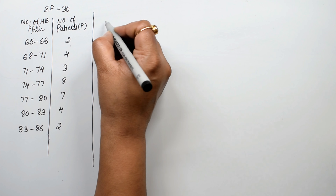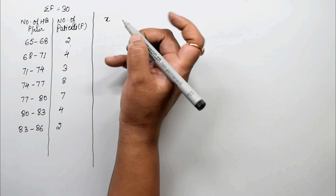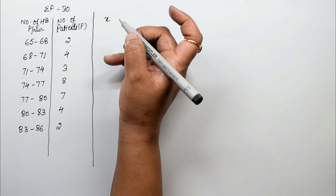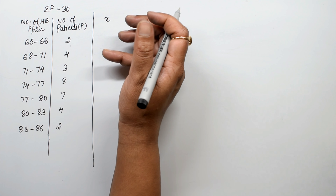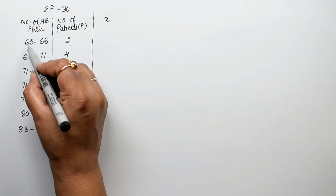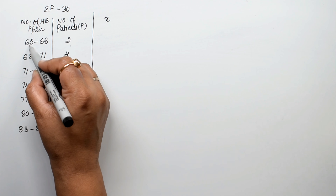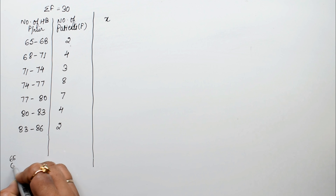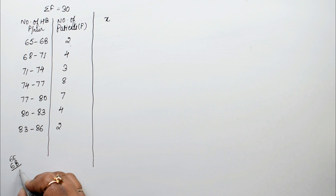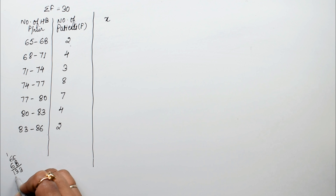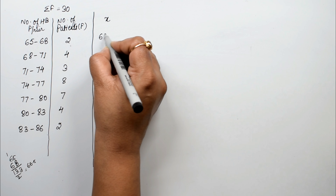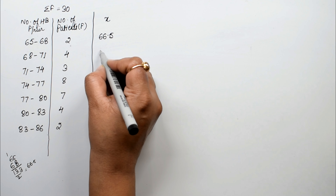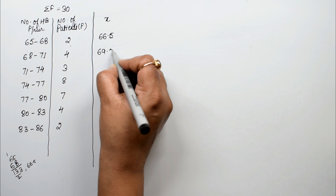We choose the assumed mean method. First we find the class marks x using upper limit plus lower limit divided by 2. So 65 plus 68 equals 133, divided by 2 gives 66.5. Similarly, we get class marks: 66.5, 69.5, 72.5, 75.5, 78.5, 81.5, and 84.5.